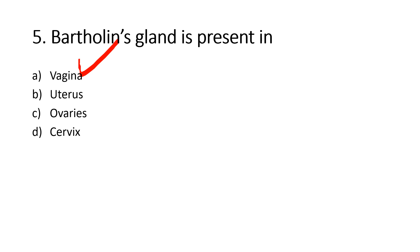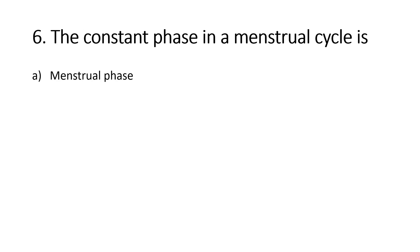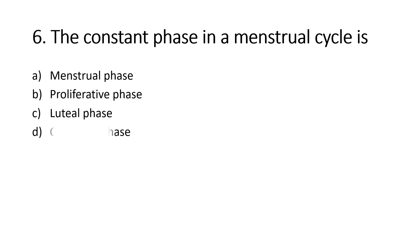The constant phase in a menstrual cycle is: Option A, Menstrual phase; Option B, Proliferative phase; Option C, Luteal phase; Option D, Ovulation phase. Right answer is Option C, Luteal phase. The post-ovulatory phase, also called the secretory phase or luteal phase, is constant at 14 days in the female reproductive cycle.